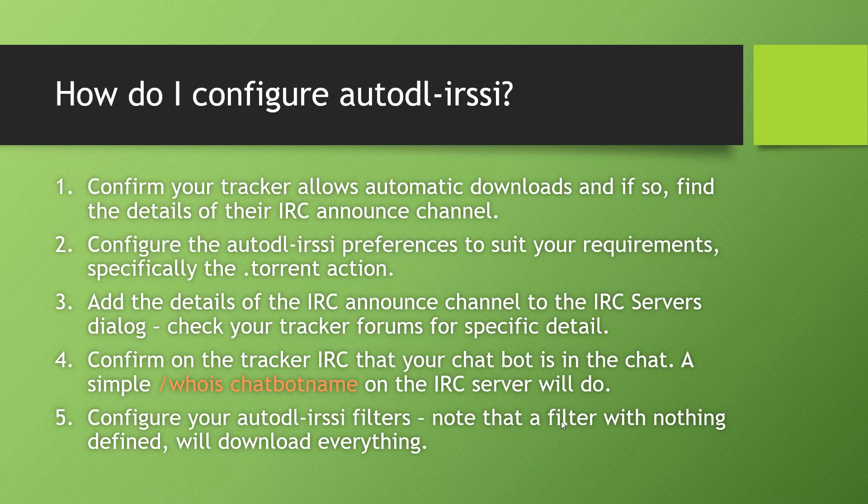The next thing you have to do is configure the preferences for Auto DL iRSSI within the rtorrent application, specifically the torrent actions — what do you want to happen with the torrent file? This can be processing it immediately, or putting it into a watch folder, which is the option I use. There are other options available which can be used as a default for each of the filters. You then have to add the details of the IRC announce channel to the IRC servers dialogue within rtorrent — click on the Auto DL iRSSI button, and there's a dialogue for IRC servers. Check the tracker forums for the specific details; in my experience it was quite quick and easy to find that information.